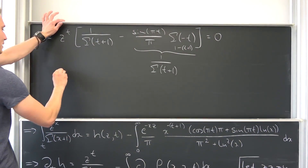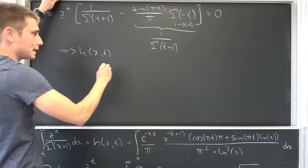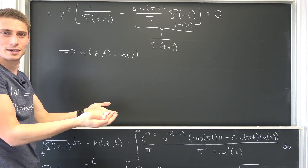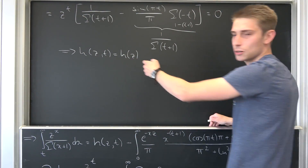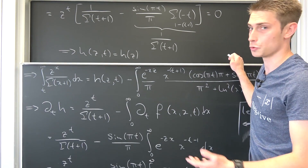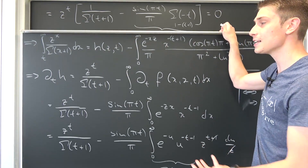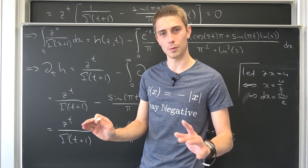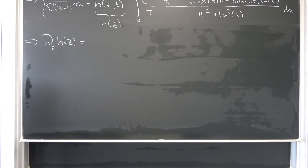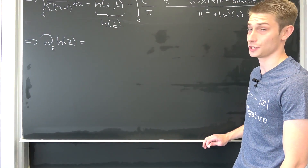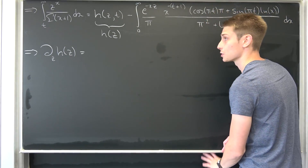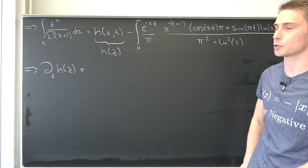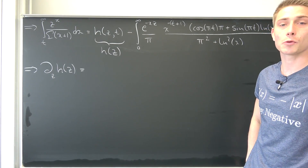Our big conclusion right here is that h(z, t) is basically nothing but h(z) — it's just a function with respect to z. No matter how you change t, it's going to be the same function all the time. That's a really cool result and it's extremely useful, because in the next step we are going to differentiate with respect to z and then we can conclude something pretty interesting.